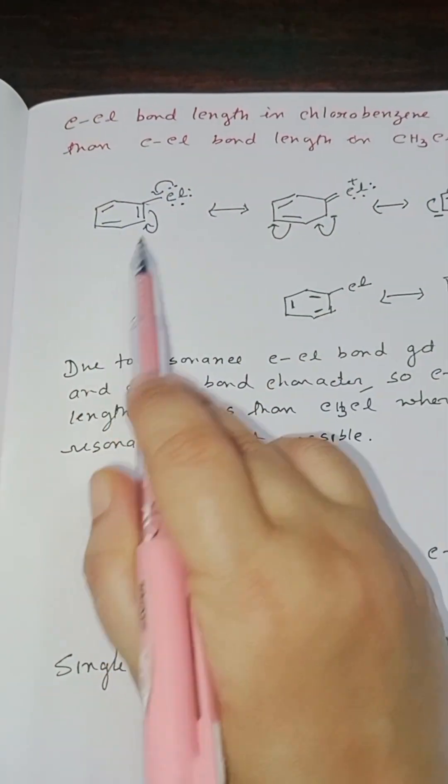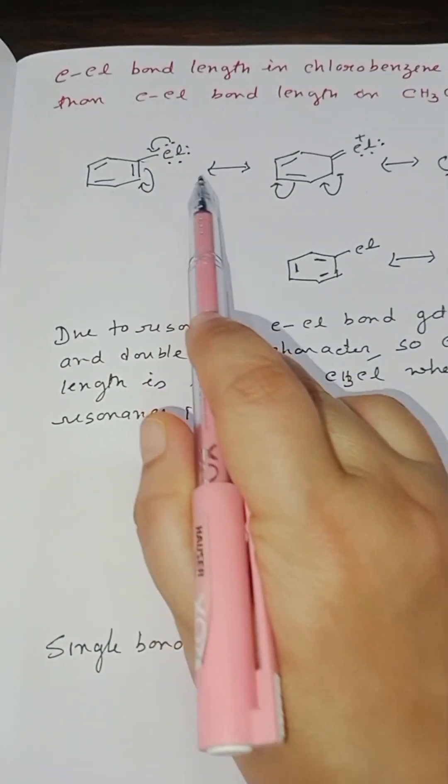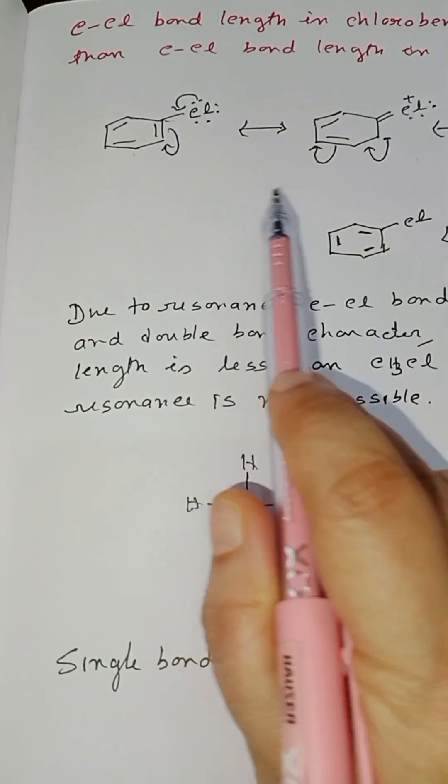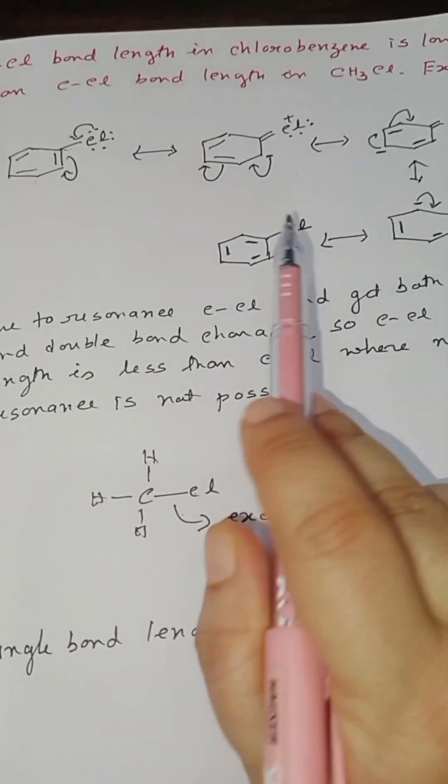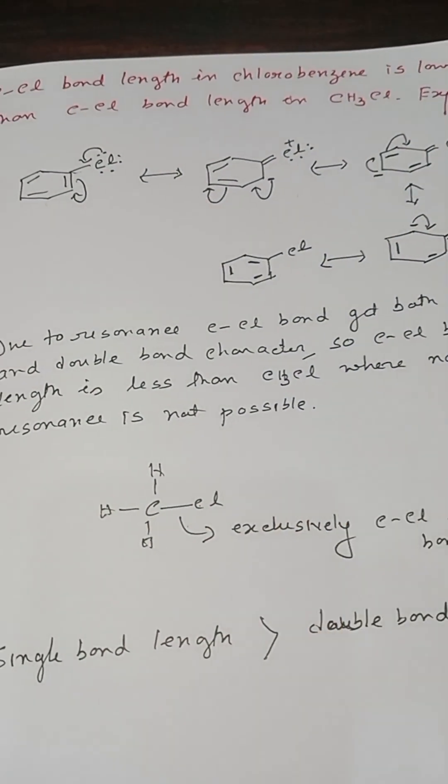That means in chlorobenzene, the carbon-chlorine bond is not exclusively a single bond or exclusively a double bond. It is in between single bond and double bond.